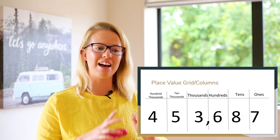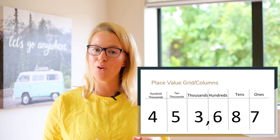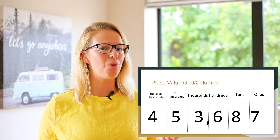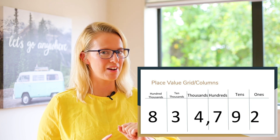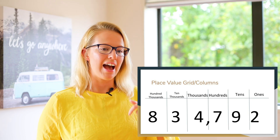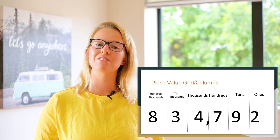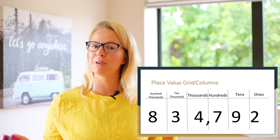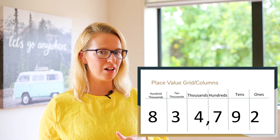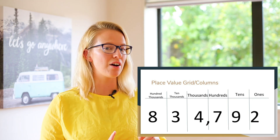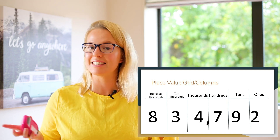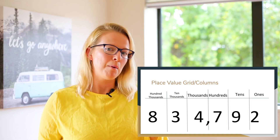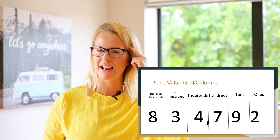Let's pick the number four at the top. What is the value of the four in this number? Look at what column it's in — it's in the hundreds of thousands column — so that tells me it's four hundred thousand. Let's try one more. We've got eight hundred and thirty-four thousand, seven hundred and ninety-two. What is the value of the three? Check which column it's in — it's in the tens of thousands column — so it is thirty thousand. That one's maybe a little bit trickier, but I know that you've got your brains working!